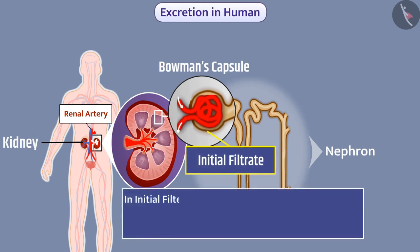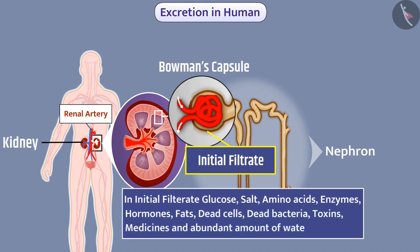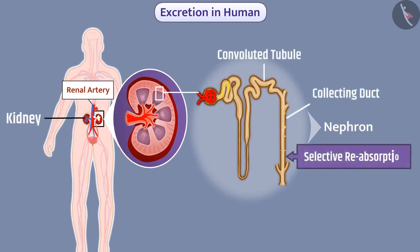We call this initial filtrate. In the initial filtrate, glucose, salt, amino acids, enzymes, hormones, fats, dead cells, dead bacteria, toxins, medicines and an abundant amount of water are present. When the initial filtrate flows through the tubular portion of the nephron, there is selective reabsorption of these materials. The level of absorption depends on the need of water in the body. The remaining liquid waste is called urine.